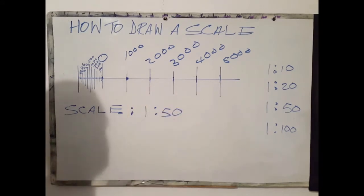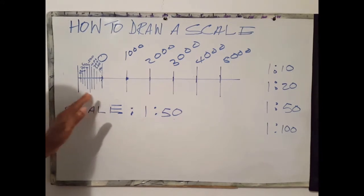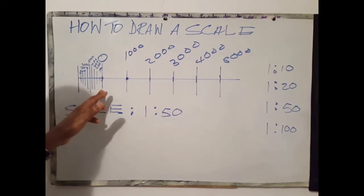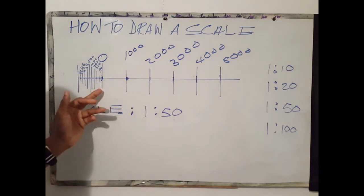Scales are normally used for building drawings. In this case what we do is divide the first increment into 10 equal parts, so here we have increments of 1000, and here we have increments of 100.